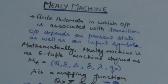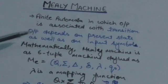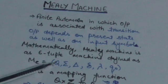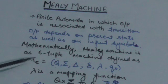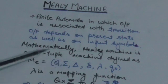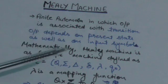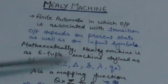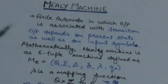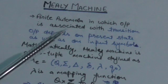Mathematically, it is a six-tuple machine. Q is the set of all states of this Mealy machine. Sigma is the set of all input symbols and delta is the set of all outputs. Delta is the transition function — it takes two arguments, that is the present state and an input symbol, and it gives the next state as output.